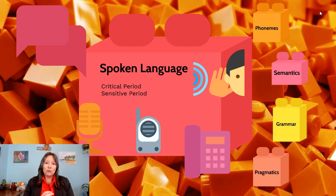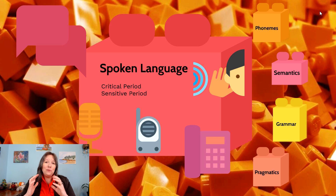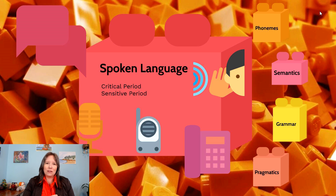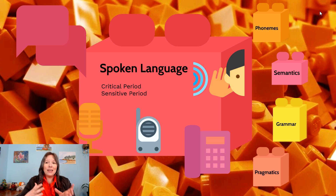The critical period refers to that essential period in the first year of life where we absolutely need exposure. The sensitive period has a little more flexibility — it's good to be exposed to certain parts of language, but if we're not, we may be able to learn those later on. The sensitive and critical periods do overlap, but early exposure matters.